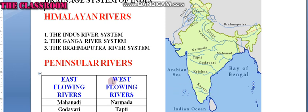Talking about the west flowing rivers: Narmada and Tapti. Narmada is the longest among the west flowing rivers of peninsular India. The Tapti is one of the major rivers of peninsular India, with a length of about 724 kilometers. It outfalls into the Arabian Sea through the Gulf of Khambhat.